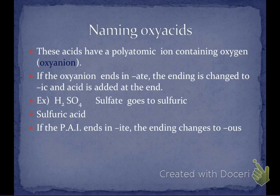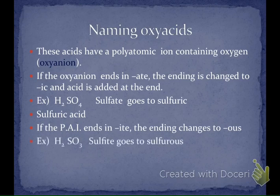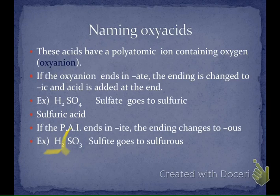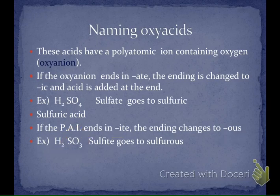If the polyatomic ion ends in '-ite,' we change the ending to '-ous' and add the word 'acid.' For example, H2SO3 — hydrogen is in the first position so it's an acid, not binary because there's sulfur and oxygen following it. I look up SO3 on my polyatomic ion sheet and find it's sulfite. Since it ends in '-ite,' we change the ending to '-ous' and get sulfurous acid.